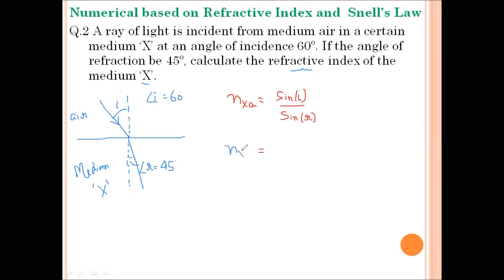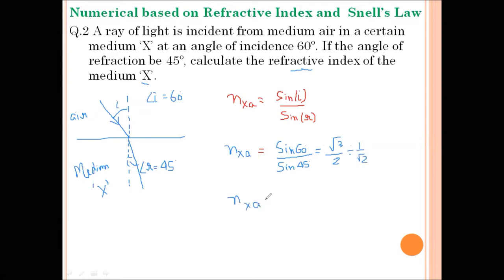The refractive index of medium X with respect to medium air equals sine 60 degrees divided by sine 45 degrees. Using a trigonometric table, the value of sine 60 is √3/2 and the value of sine 45 is 1/√2. On solving, the refractive index of medium X with respect to medium air comes out to be 1.22.